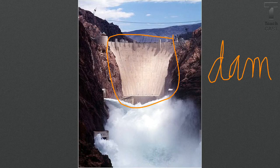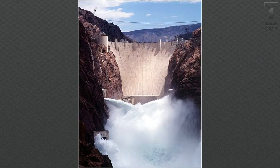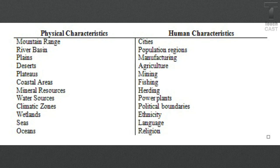So this is a human characteristic picture. Going back to the T-chart, it's really important to understand the difference between physical and human characteristics, because tomorrow we're going to do a worksheet that helps us apply our knowledge. Remember: one is man-made and one is naturally occurring.